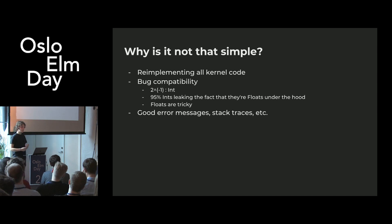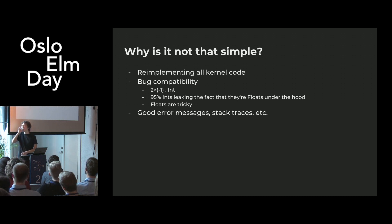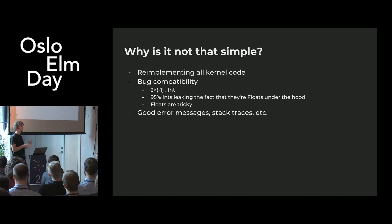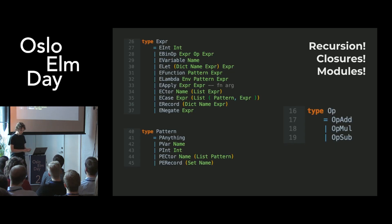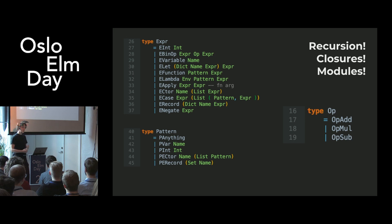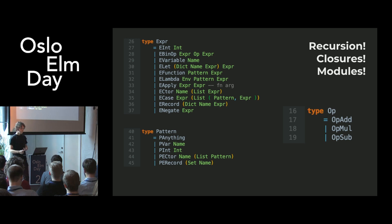There are a few other things you want from an interpreter that you don't have in the compiler — mainly error messages and stack traces, things that happen at runtime. Since Elm is type-safe, these are mostly used for debugging the interpreter itself. Things we didn't cover previously include recursion, mutual recursion — multiple functions calling each other in a cycle — closures, where a lambda references a variable from outside its scope, and also modules and packages. These are pretty straightforward to implement, and most are already implemented on GitHub.